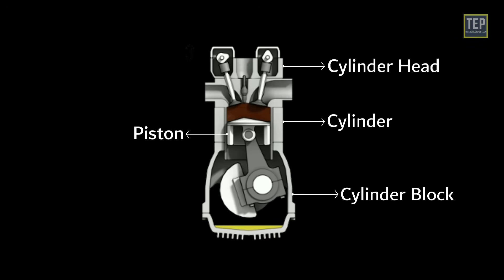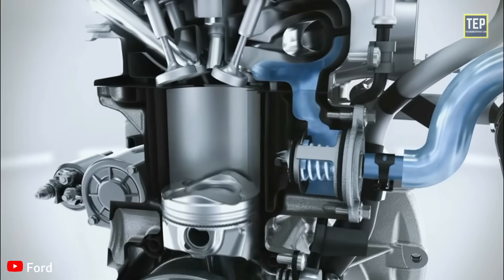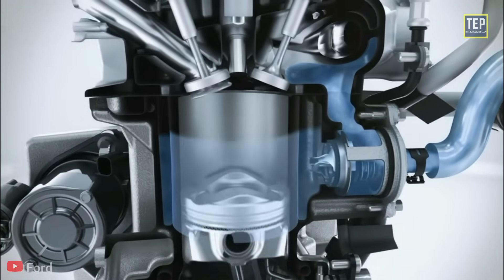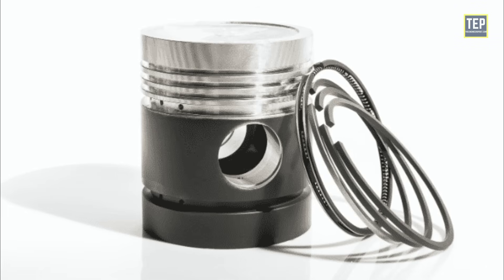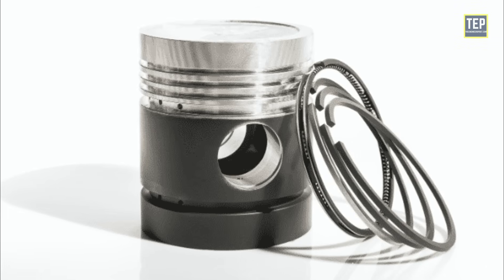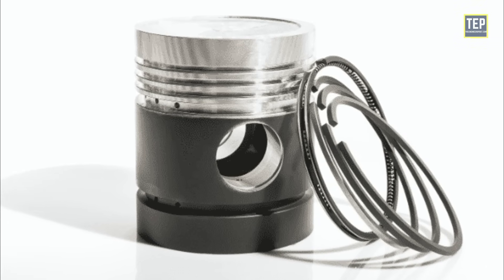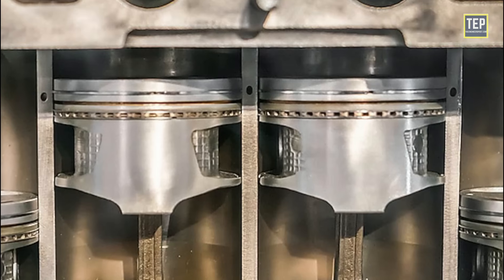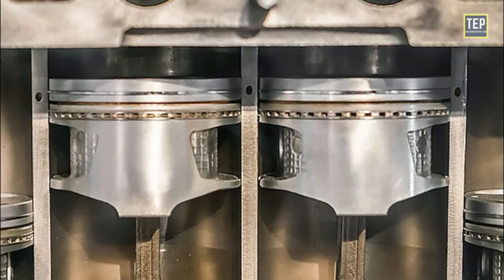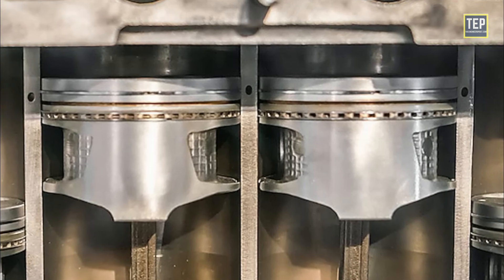The piston is a moving part of the combustion chamber; it is responsible for converting the energy released during the combustion process into mechanical work. Piston rings are metallic split rings attached to the outer diameter of a piston. In an IC engine or steam engine, piston rings are used for sealing the combustion chamber so that there is minimal loss of gases to the crankcase.